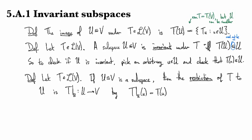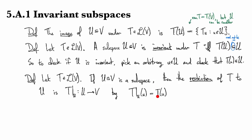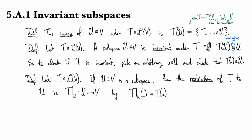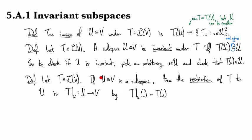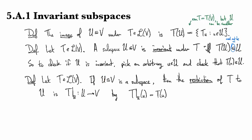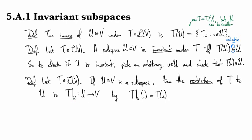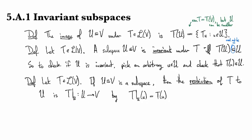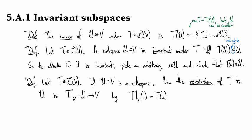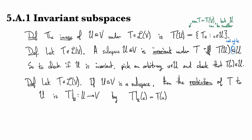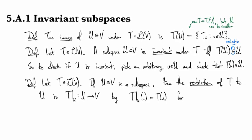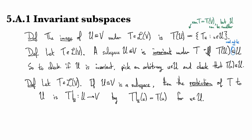And it's defined by whatever T did. This T without the decoration is defined on all of V. So, in particular, it's defined on some subspace. And so, that's just how we use it to describe or define what the restricted operator is.